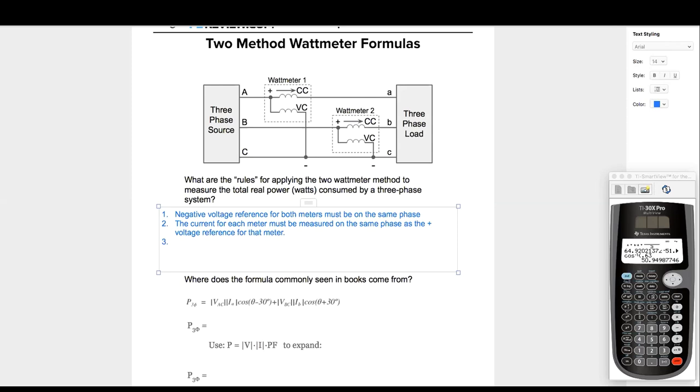The last rule that Gage nailed in the chat was we have to use different phases for the positive voltage reference for the two wattmeters. Or let's think about this. How about each meter must not use the same phase. That's a way that it cannot be misconstrued.